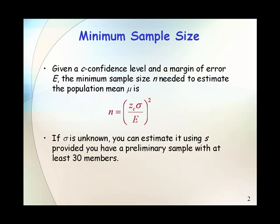If sigma is unknown, you can estimate it using S, provided you have a preliminary sample with at least 30 members.